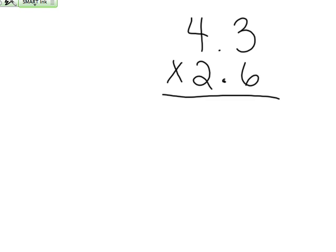4 and 3 tenths rounded to the nearest whole number would be what? It would be 4.